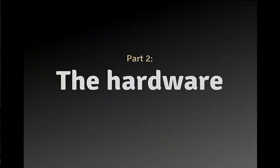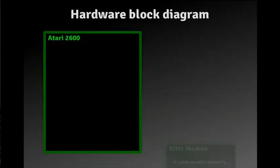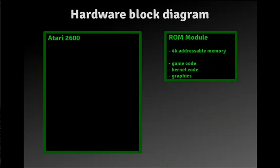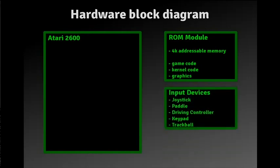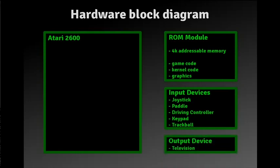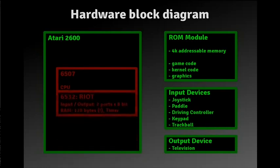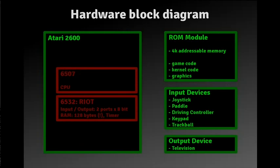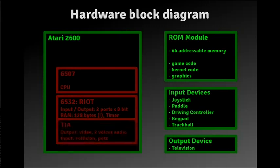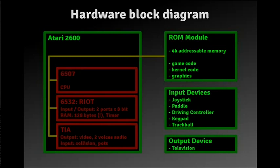So, let's take a look at the hardware. This is the block diagram. We've got the Atari, the ROM module that contains all the code — there's no firmware or anything like that in the Atari itself, the Atari in itself is dumb. We've got input devices like joysticks and paddles, and the output device — the television. Inside the Atari we've got the 6507, the CPU; a chip that contains RAM, IO ports and a timer; and the Television Interface Adapter. These are all connected through a CPU bus. Input devices are connected to the RIOT, and some also to the TIA for analog inputs. The TIA outputs to the television.